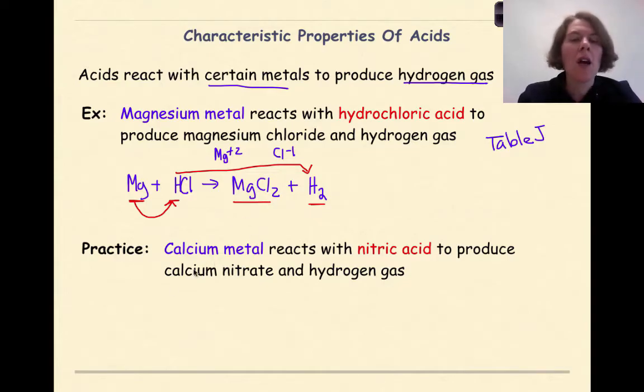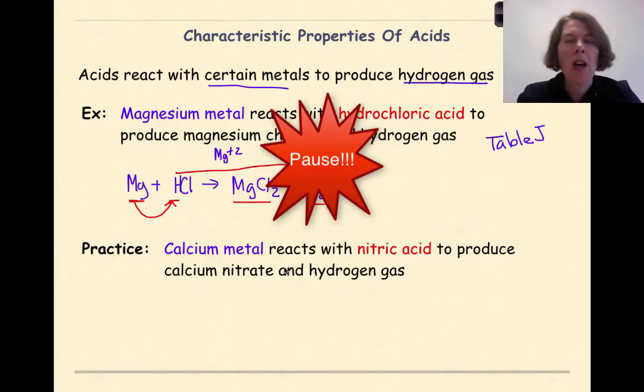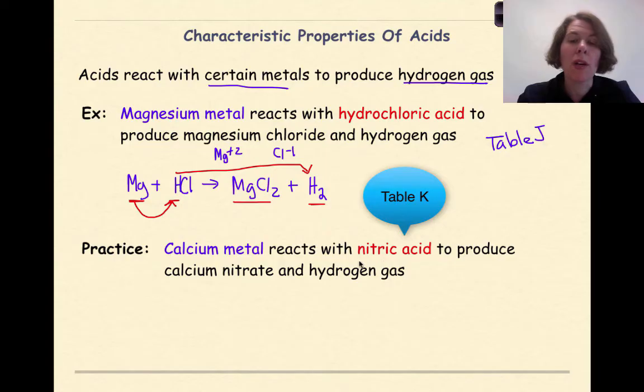Now let's do some practice. Calcium metal reacts with nitric acid to produce calcium nitrate and hydrogen gas. See if you can write out this reaction and then check your work with me. And remember, if you need the formula for nitric acid, it's in your reference tables. Welcome back. Let's see how you did.